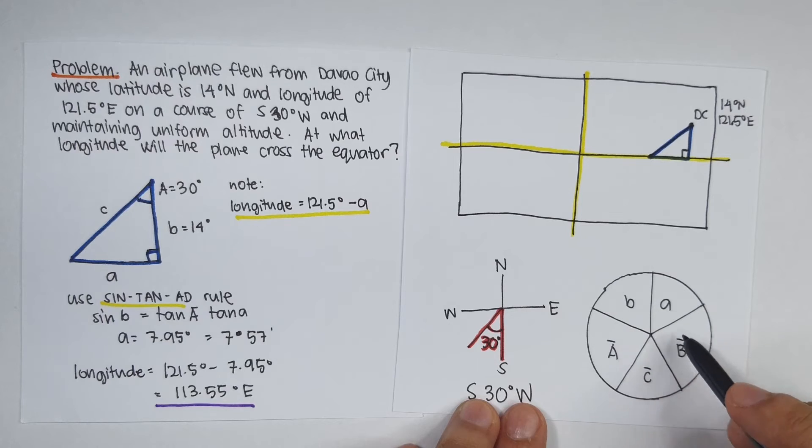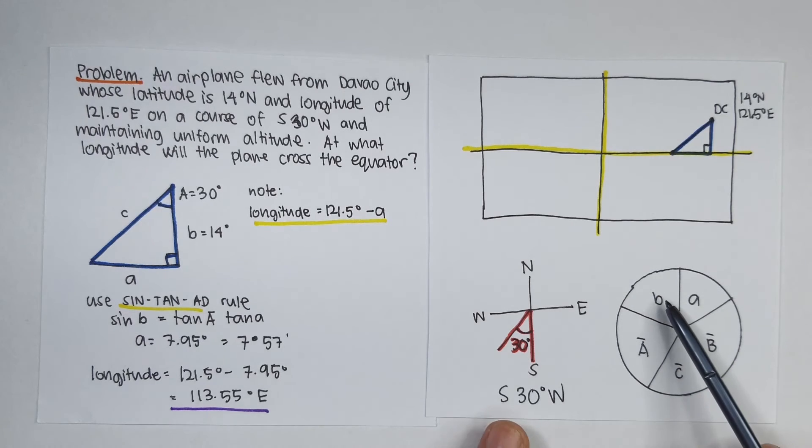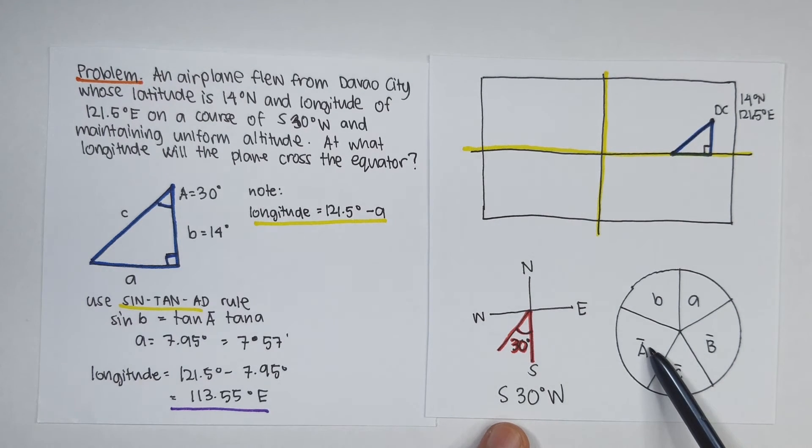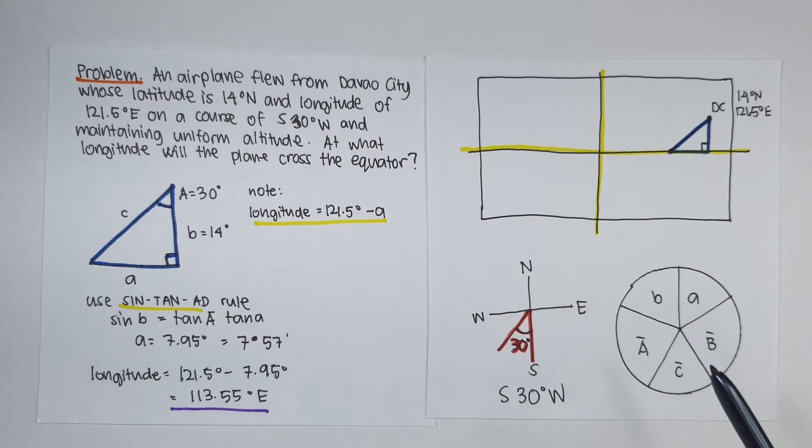And we know the value of B and angle A. The unknown side is side A. So as you can see, we can use the Sintan ad rule to solve for A. That is, sine B is equal to tangent of its adjacents. So that is, sine B is equal to tangent of A bar times tangent of A.